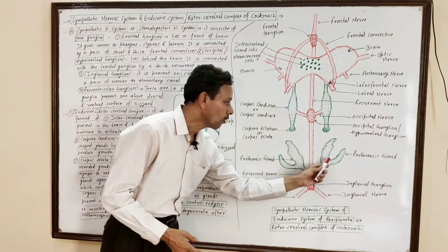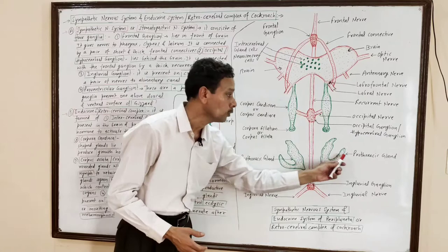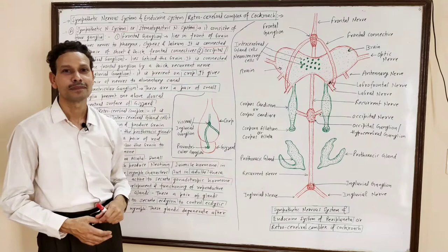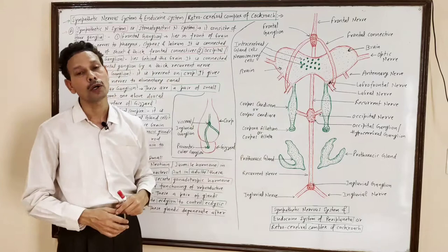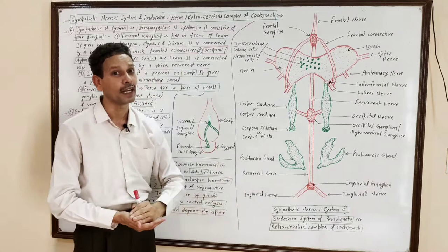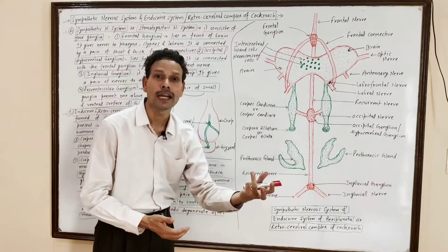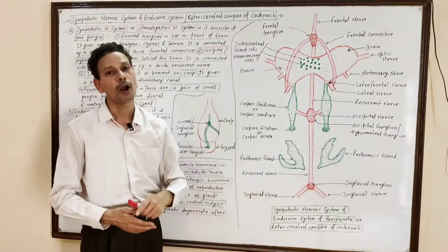Another pair of irregular glands are the prothoracic glands — irregularly arranged, branched glands. These prothoracic glands secrete ecdysone hormone, a moulting hormone, that controls the moulting and metamorphosis of cockroach. Importantly for competitive exam students: these are the only endocrine glands which degenerate after metamorphosis, as their role is over after moulting.